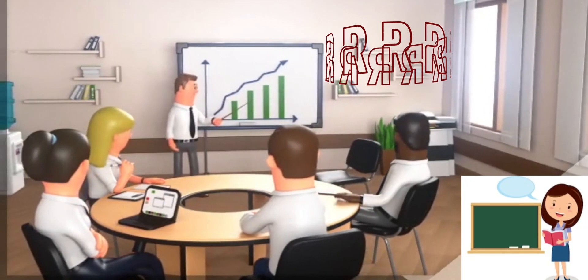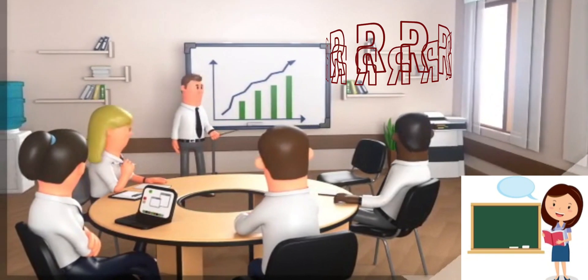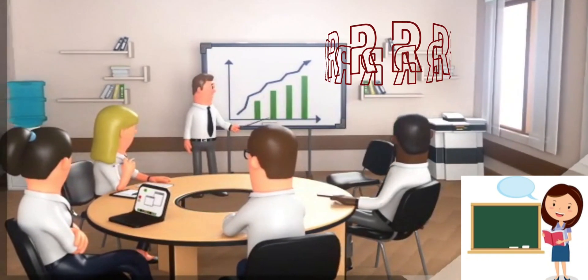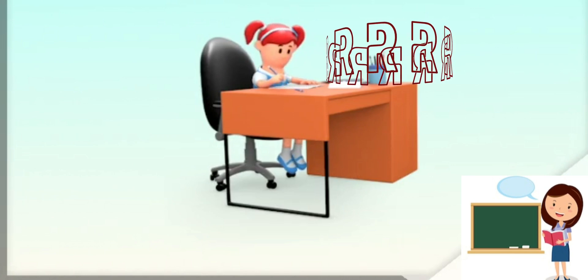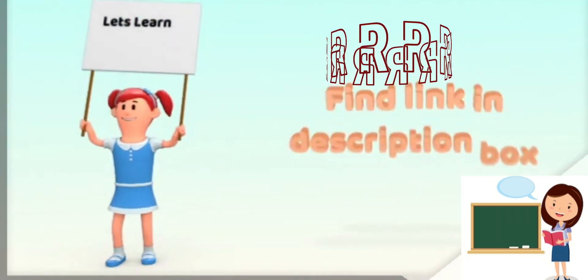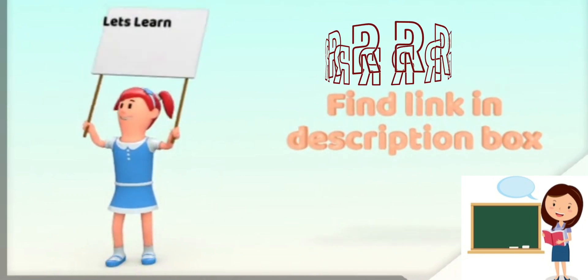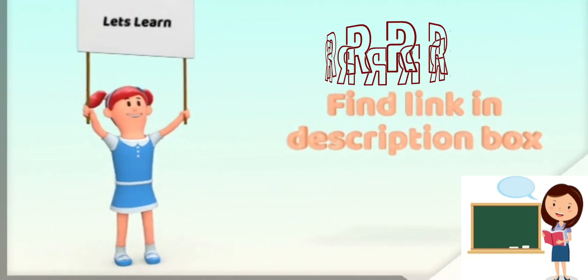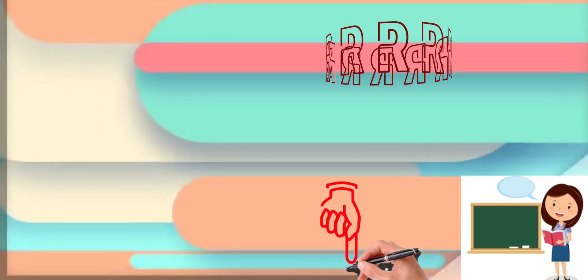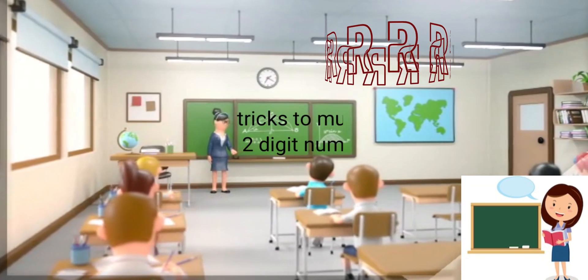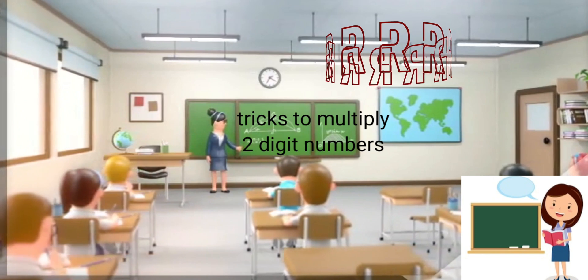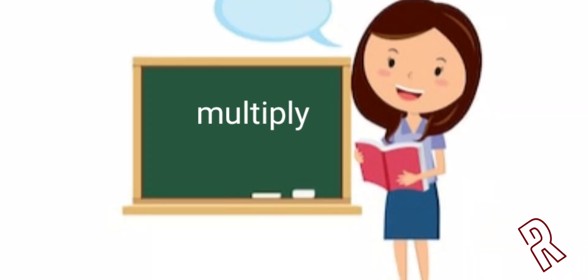Hi and welcome back everyone to Rachel's Edu Network - Fun with Mathematics. In the previous session we saw how to multiply single digits by drawing crossover lines and counting the number of intersecting points. If you haven't watched yet, please find the link in the description box below. Today in this session we will be using the same Japanese method to multiply two-digit numbers. Get your paper and pen!